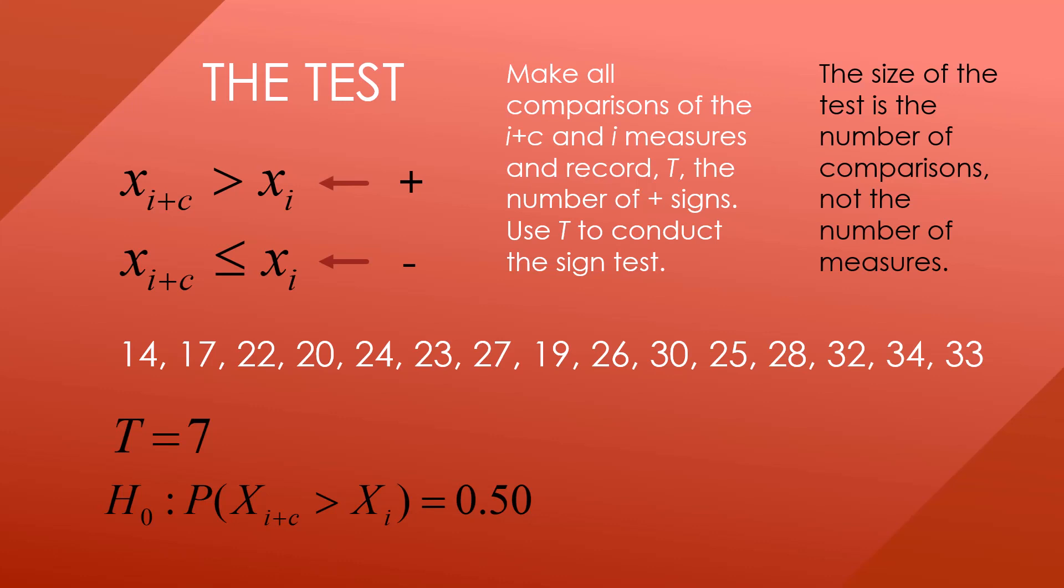When we do the sign test for these particular data, we get that the probability that T is greater than or equal to 7 is 0.0078. So the p-value is very small, and we will conclude that there is an upward trend.